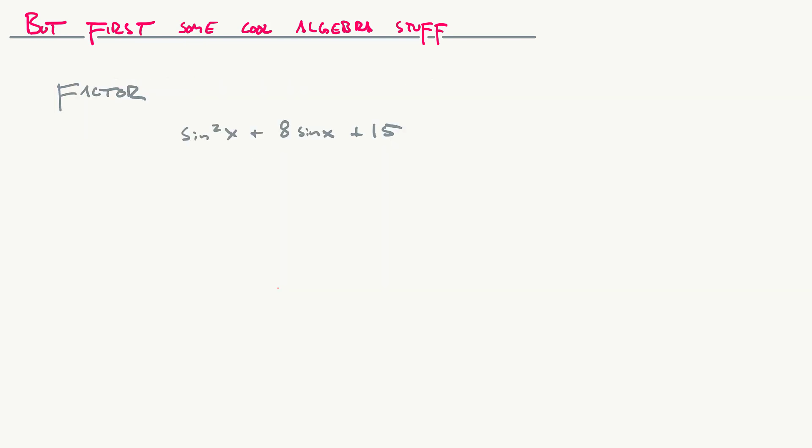But let's say we wanted to also do something like factor. Because we can expand, we can factor in a similar way. You could think about sin(x) as a variable and call it a. So this is basically a² + 8a + 15. The leading coefficient is 1, so we're just looking for two factors of 15 that add to give us 8.